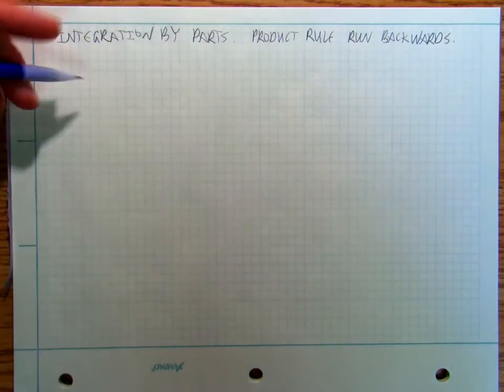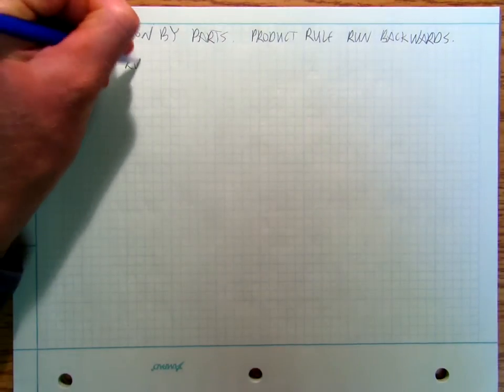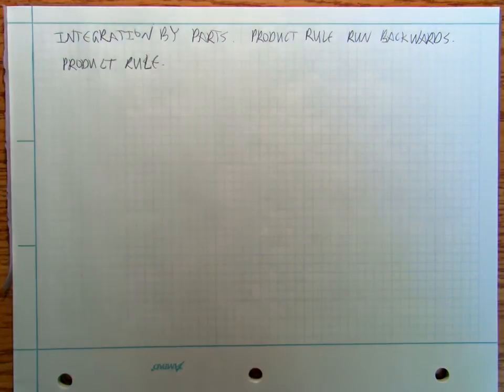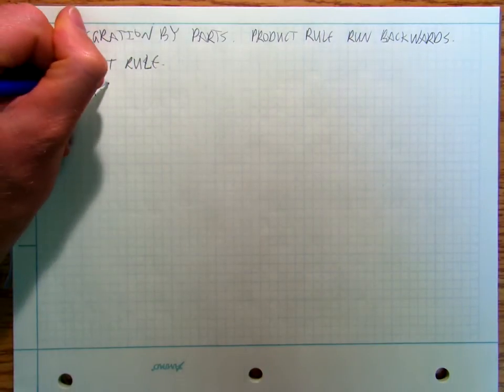And so let's look at product rule for a second. Okay, so we're going to say that y equals u times v.